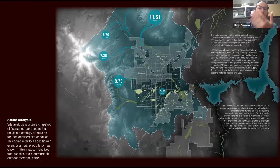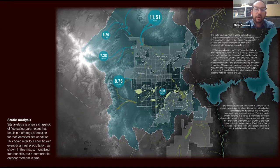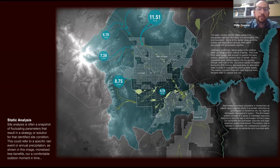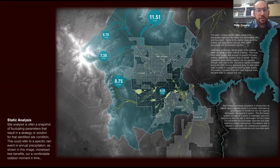I want to show three examples of how I'm trying to utilize computational modeling and data to advance the way we think about space. Here is a very typical site analysis with just an overlay of information. Unfortunately, it's often very static — it doesn't show the temporal dynamics and changing conditions of the site.